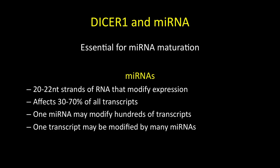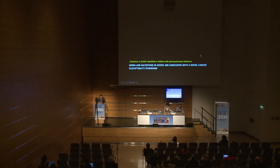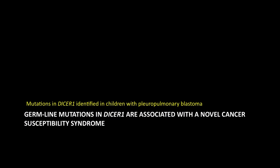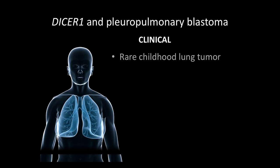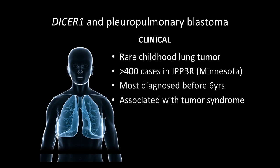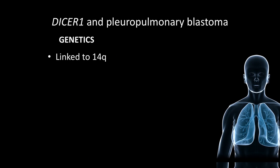The key event that got me interested in this area was a paper showing that DISA mutations were found in children with pleuropulmonary blastoma, which is a very rare lung tumor — only a few cases a year in most countries, about 400 to 500 cases ever reported, most collected by the registry in Minnesota, and most diagnosed before age 6. It was known to be associated with a tumor syndrome, and when linkage came to 14Q, DISA was identified as a candidate, and mutations were found in children with PPBs. This was published in Science seven years ago.